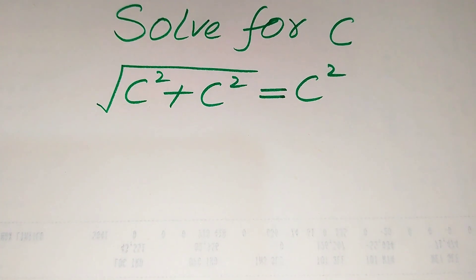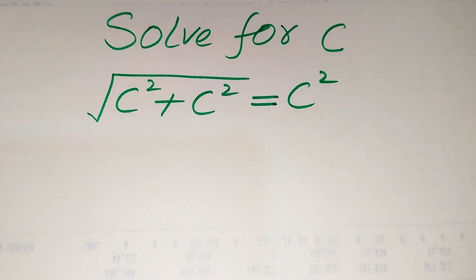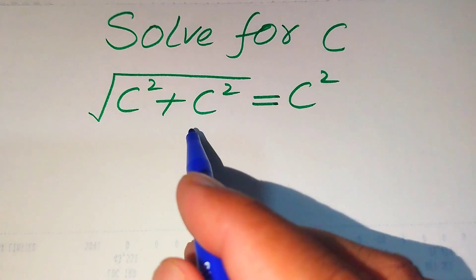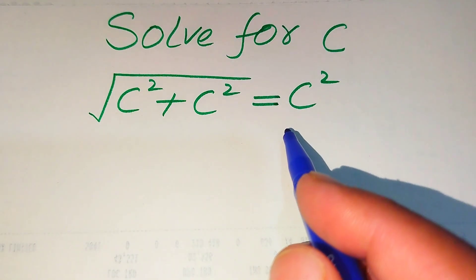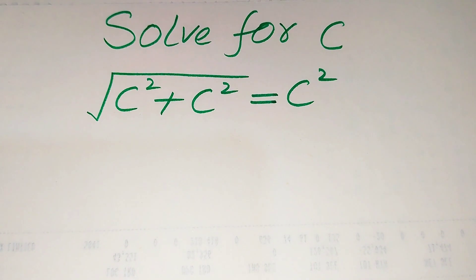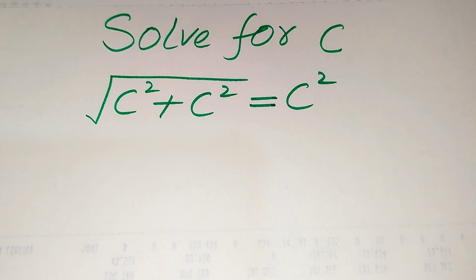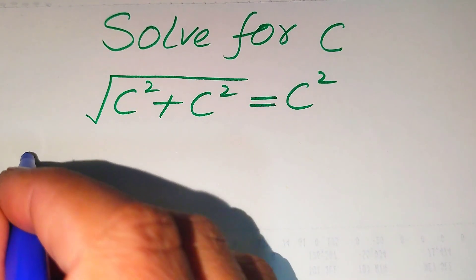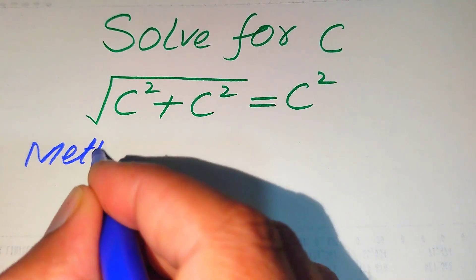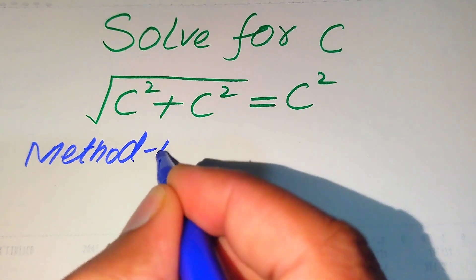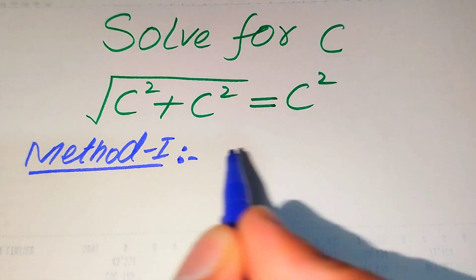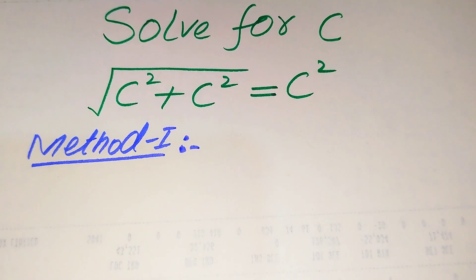Hello everyone. How to solve this problem: for the values of c, if we have the square root of c squared plus c squared equals c squared. We will solve this problem for all values of c. First we find all the roots of this equation, and at the end we verify which roots are solutions and which are extraneous. We solve this problem using two methods.